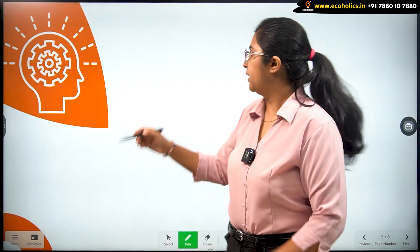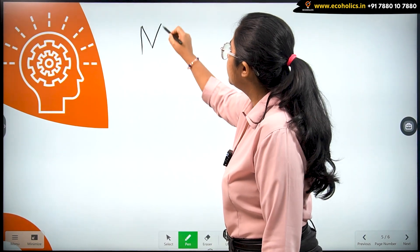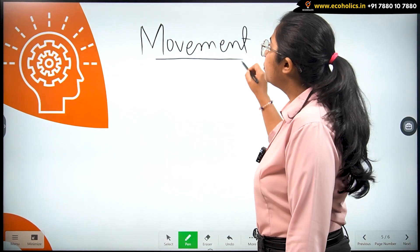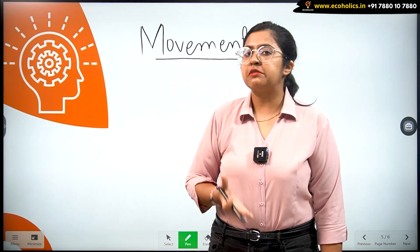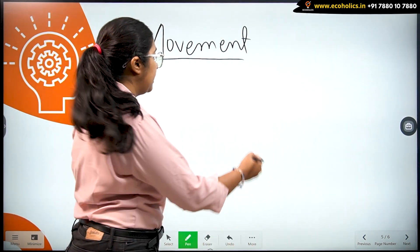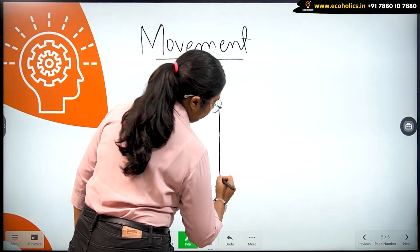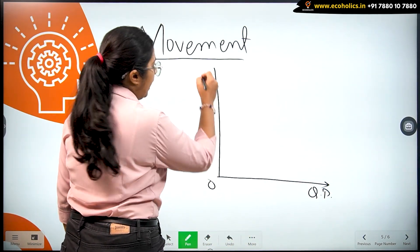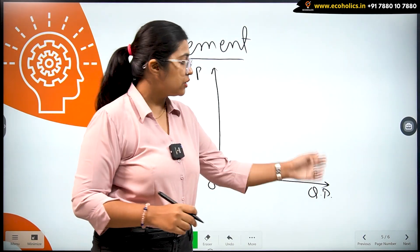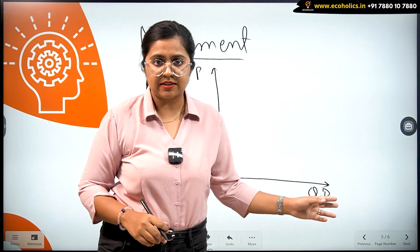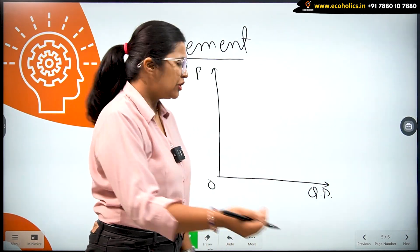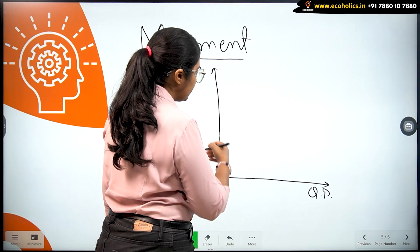Let's begin with the movement along the demand curve. We are going to start with the concept of movement. When we talk about movement, we are talking about the same demand curve. So same demand curve meaning that if we have quantity demanded on the x-axis and price on the y-axis, you have a demand curve. Now before drawing the demand curve, let's draw a simple scale of events.